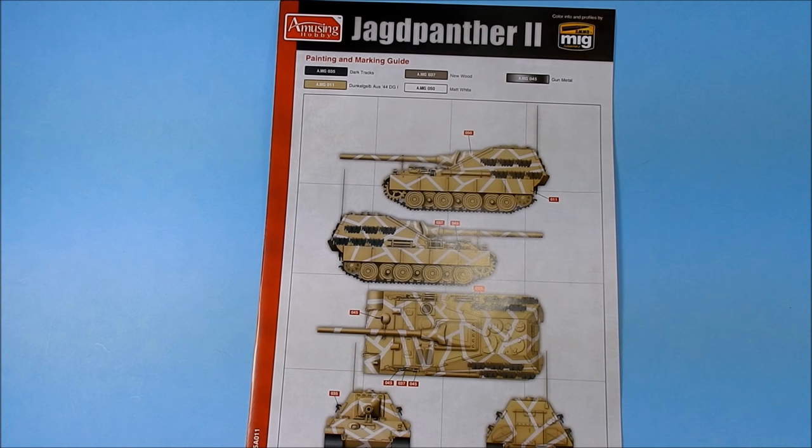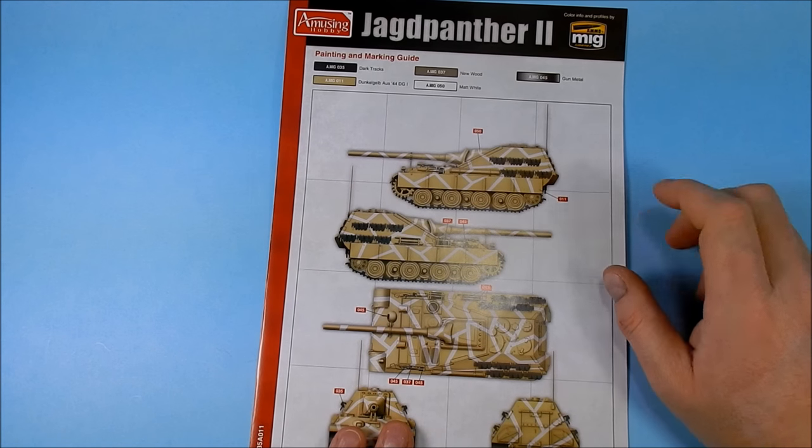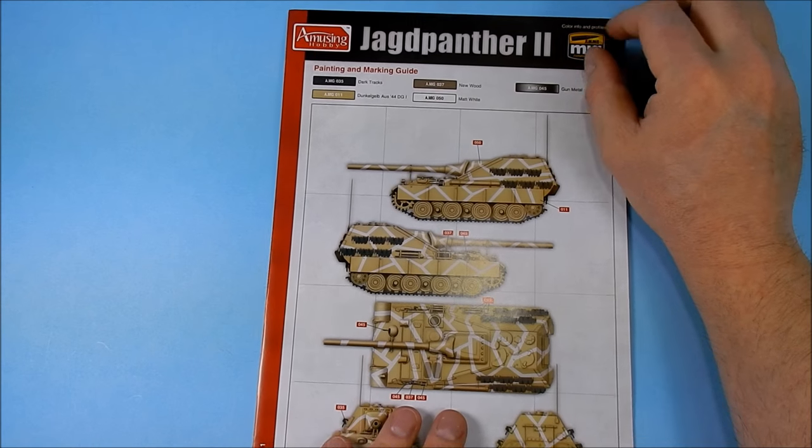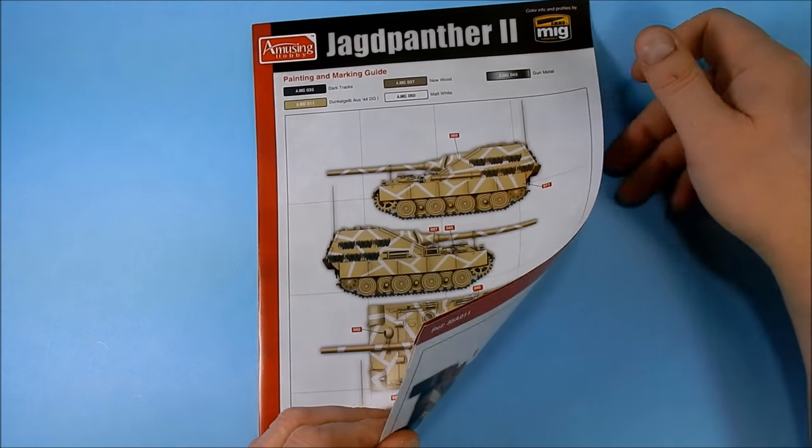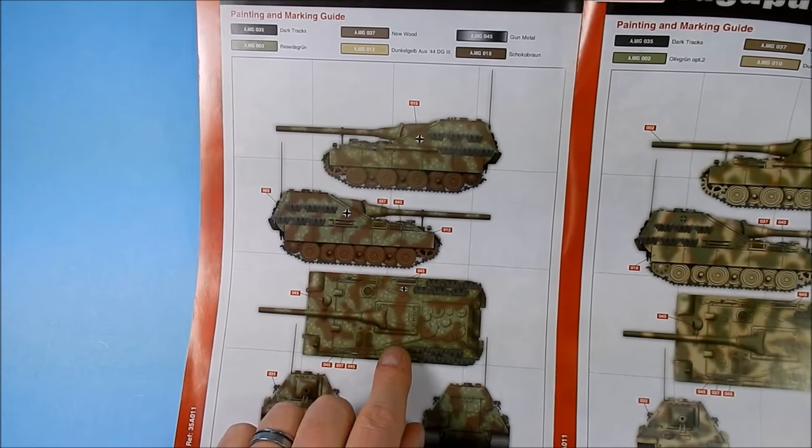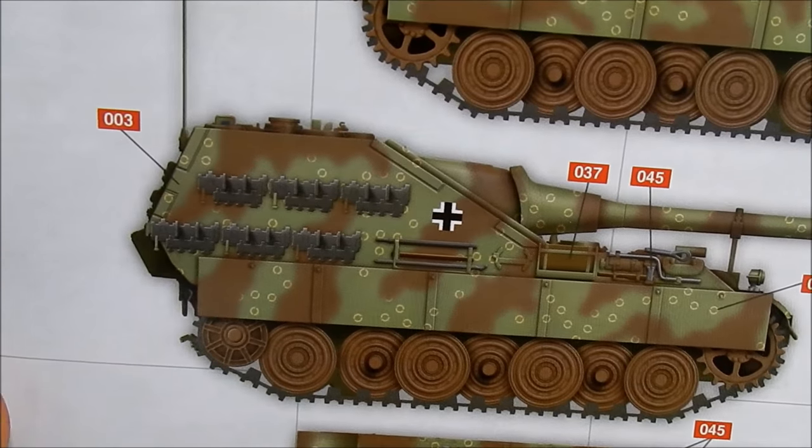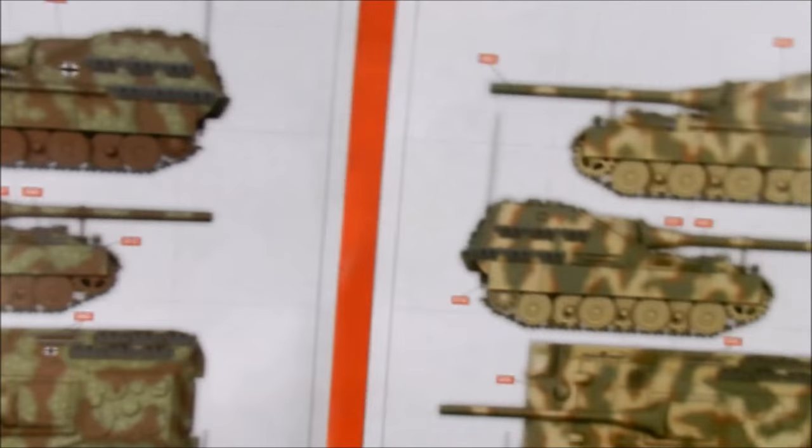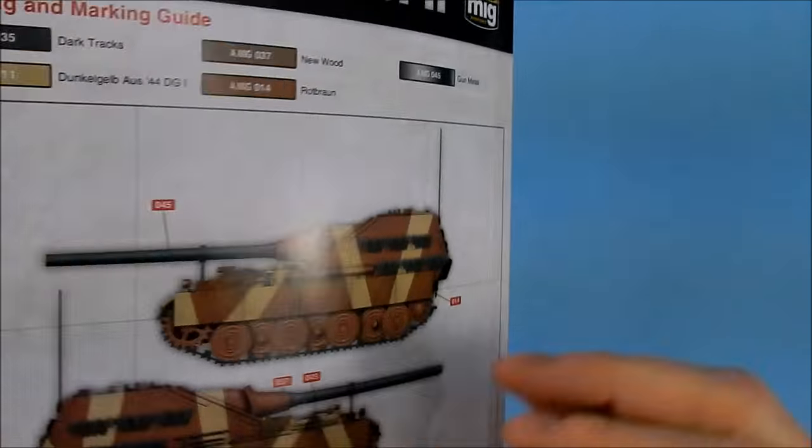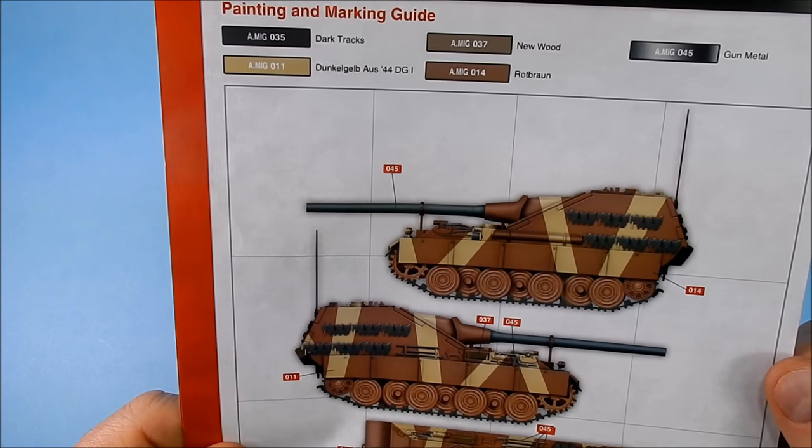And last but certainly not least we have a four page color guide. All the colors are in MIG Ammo colors. So we have a nice two color in white and dunkel grab, and a nice kind of tri-tonal octopus pattern, more of a traditional tri-tonal, and then a two-tone red brown and dunkel grab.